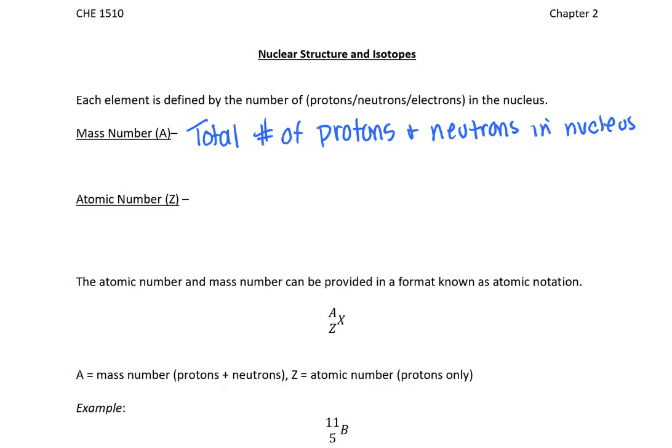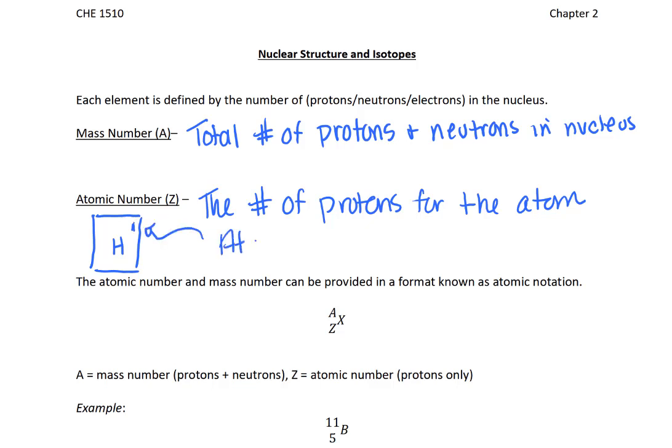When we look at the atomic number, this is the number of protons for that atom or element. When we consider the periodic table, if we had something like hydrogen, there's a number one in the upper left or right-hand corner. That number one is the atomic number, the number of protons.